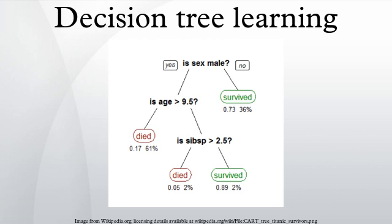More descriptive names for such tree models are classification trees or regression trees. In these tree structures, leaves represent class labels and branches represent conjunctions of features that lead to those class labels. In decision analysis, a decision tree can be used to visually and explicitly represent decisions and decision making.